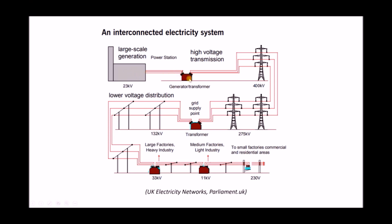As we move from left to right we need to step up that voltage — from 23 kilovolts all the way up to 400 kilovolts. There's a very important reason for that. Once electricity has been generated it needs to be transmitted over the transmission network, which runs the entire length of the country. The idea behind stepping up the voltage is that by stepping up voltage we step down the current, so the electricity being transmitted has a much lower current and is less likely to incur energy losses.